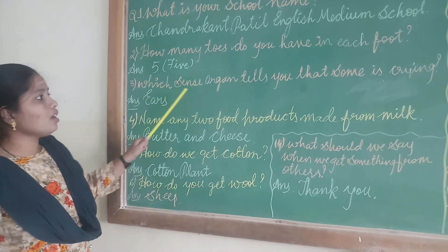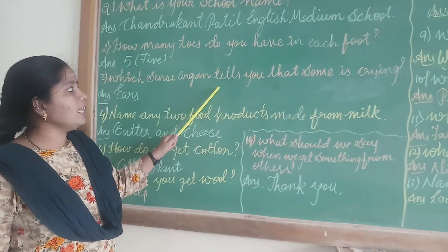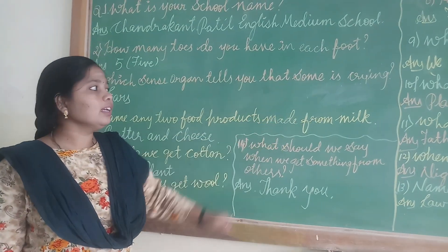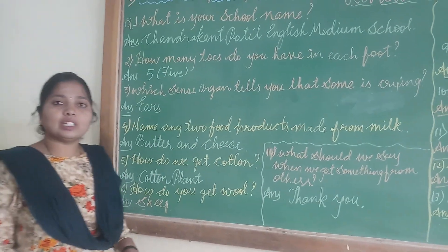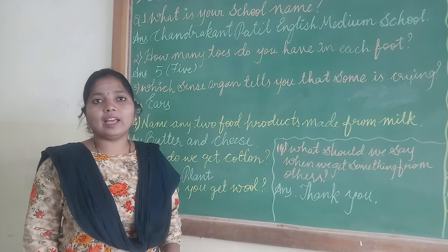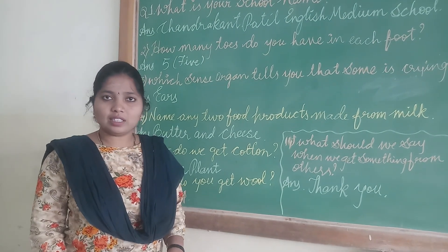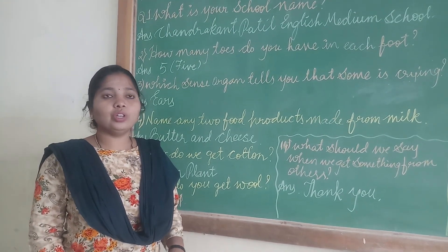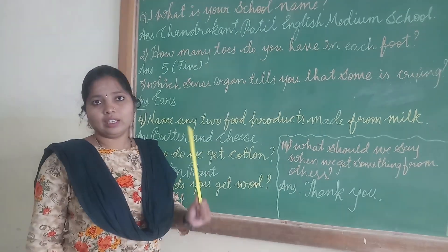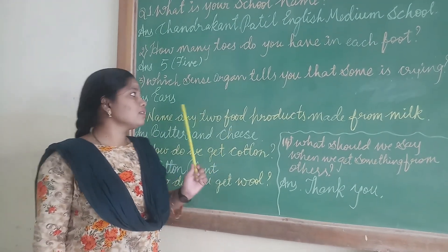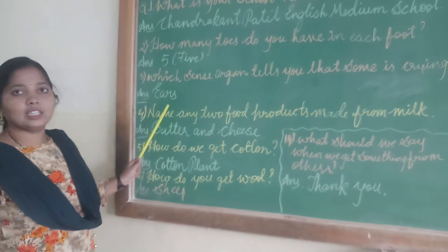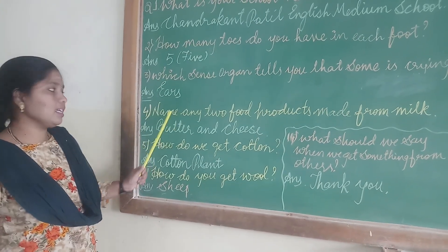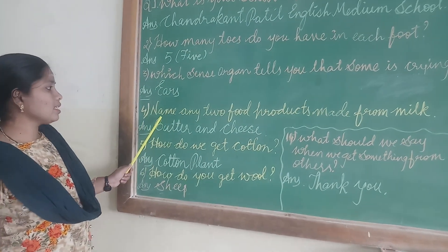Next question: Which sense organ tells you that someone is crying? Which sense organ tells you that someone is crying? Is it your nose? No — it's your ears. So the answer is ears. E-A-R-S, ears.